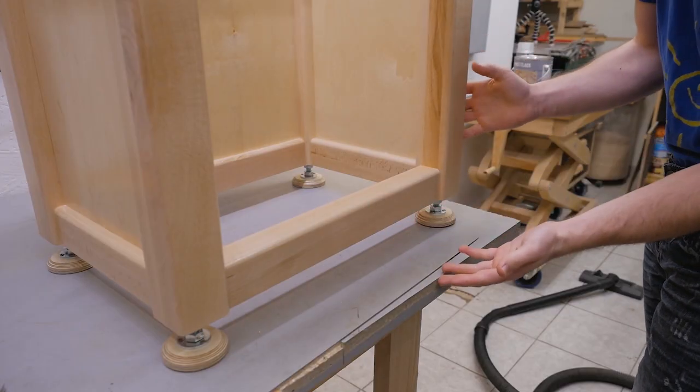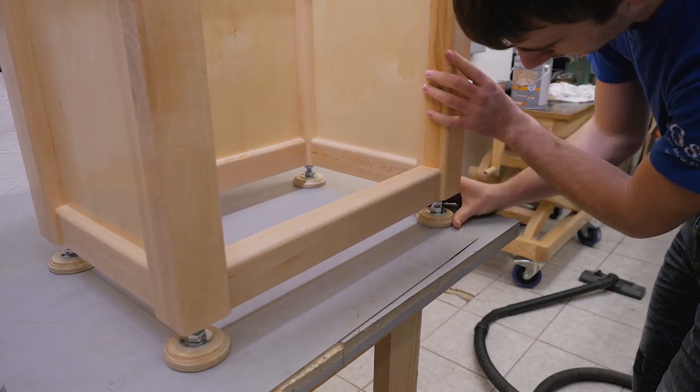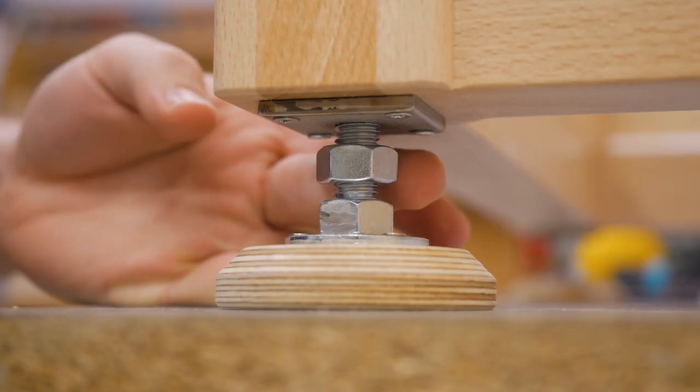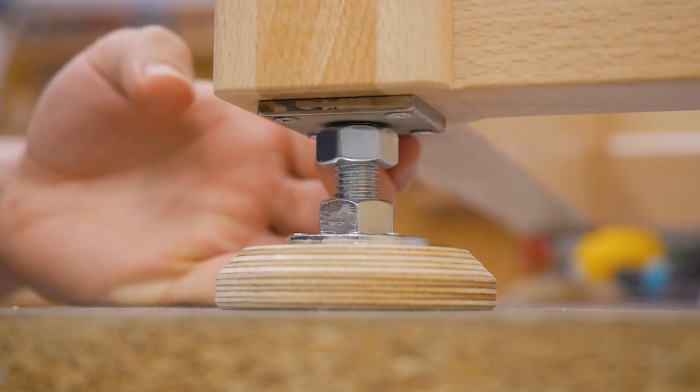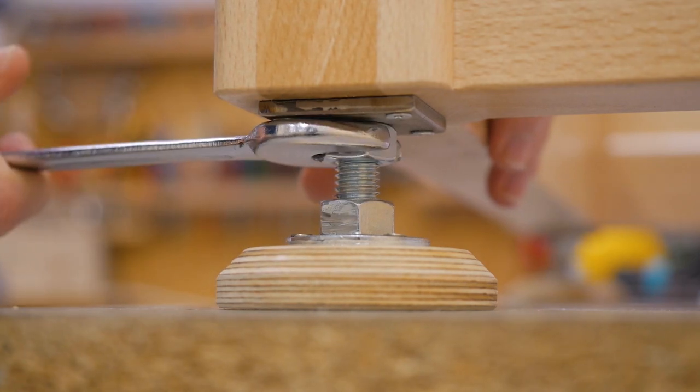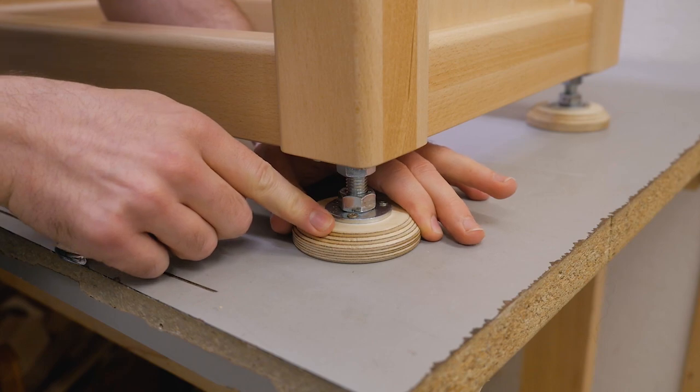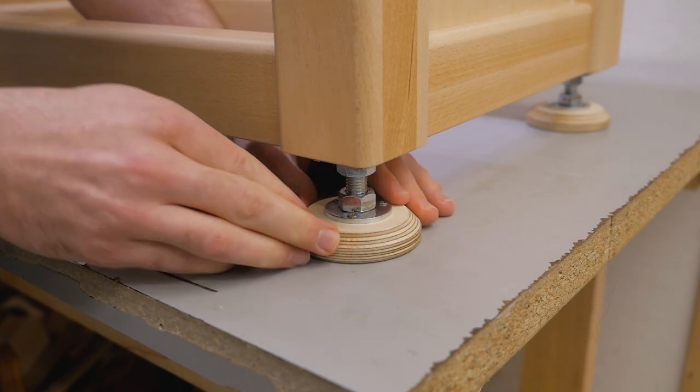The last step now is to thread on the second nut and then thread the foot into one steel plate. When you then have whatever piece it is at your final location you can easily level it out. And when you're done thread the second nut up to the steel plate and tighten it against it.